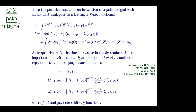Time reparametrization: f(sigma) is any monotonic function from a circle to a circle. If you make this transformation from tau to sigma and put it back, you get the same action. So there's an infinite set of equal-action configurations of G and sigma. At the saddle point we're only interested in those that are functions of tau₁ minus tau₂ — those are the physical ones. But when going beyond the saddle point, you do have to worry about this time reparametrization symmetry.